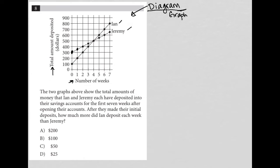So let's read the actual question. The two graphs above show the total amounts of money that Ian and Jeremy each have deposited into their savings accounts for the first seven weeks after opening their accounts. Okay. After they made their initial deposits, which I'll just put in red. So here is Jeremy's initial deposit. Here is Ian's initial deposit. So after they made their initial deposits, how much more did Ian deposit each week than Jeremy?